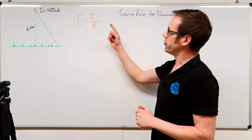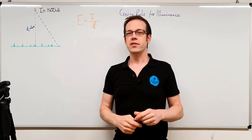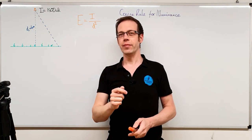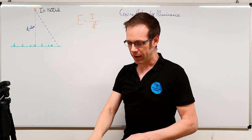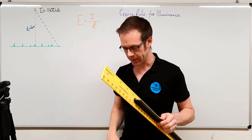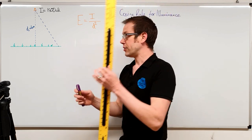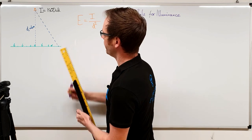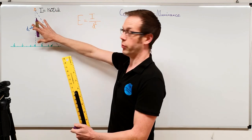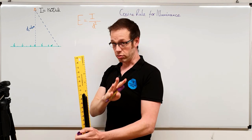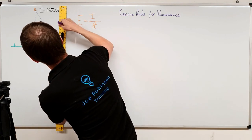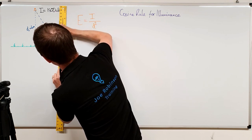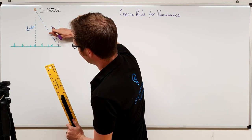So we've established this is the cosine rule for illuminance. Where does the cosine part come in? We've already mentioned that light shining from the source to a point off-centre is hitting the surface at an angle — and that's the angle we're interested in. Now, this might seem a little contradictory, but bear with me. What we're really interested in is the angle from perpendicular — how far from perpendicular the light is hitting the surface at.